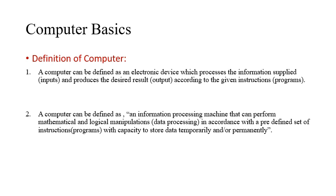The computer is also formed in the same manner. A computer can be defined as an electronic device which processes the information supplied, that is inputs, and produces the desired output according to the given instructions. Instructions means programs. So the three things are: input, output, and programs.